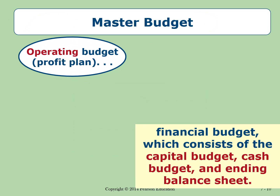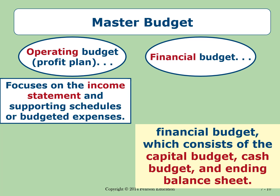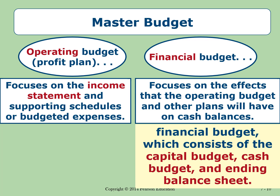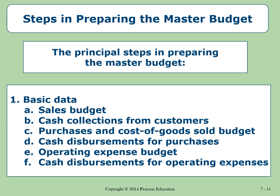When we speak about the master budget, the operating budget refers usually to the income statement, and the financial budget usually refers to the capital budget, cash budget, and ending balance sheet. When we prepare a budget, the most important starting point is the sales budget. Then we move to cash collection, then purchases and cost of goods sold, then cash disbursements related to it, then the operating expenses budget for selling and administrative, and then cash disbursements for operating expenses.